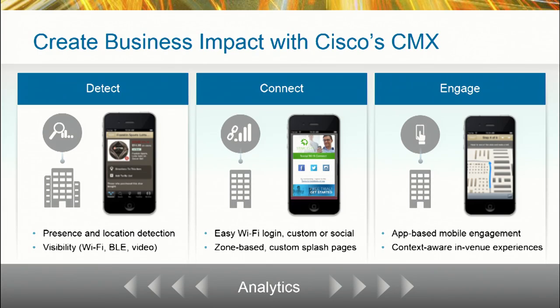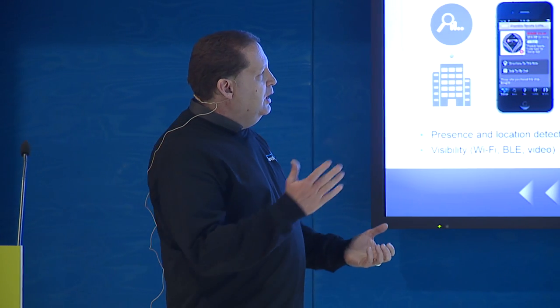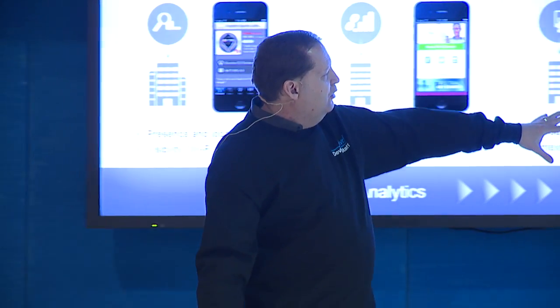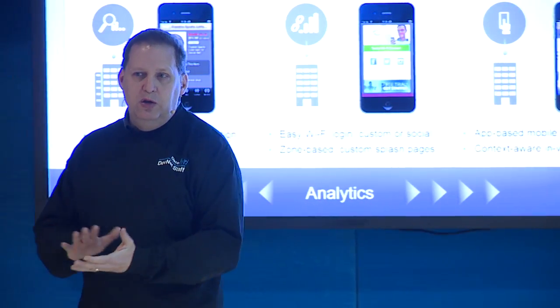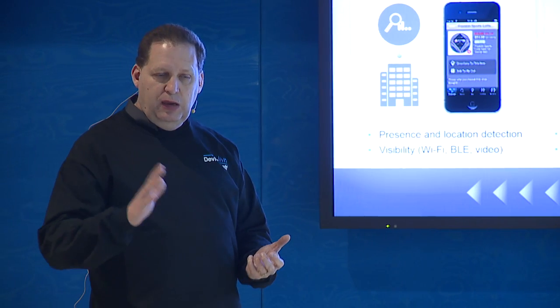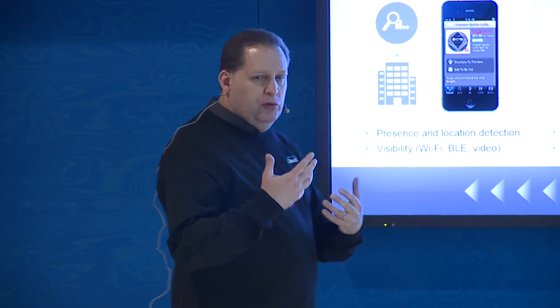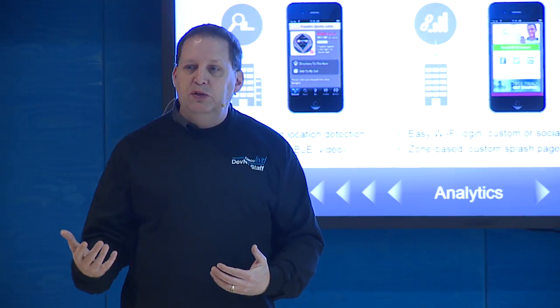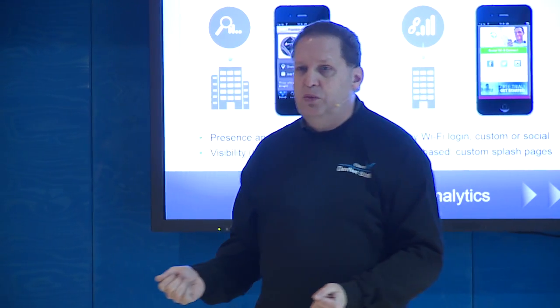The next silo, and the one we'll go over more, is engage. Now that we've got you on the network, we want to engage you. We can do the blue dot experience — show you where you are, give you navigation, take you to places, and give you context-aware information such as signage, advertisements, and everything around you based on your location. Not only on your phone, but you can actually interact with the environment around you based on who you are.